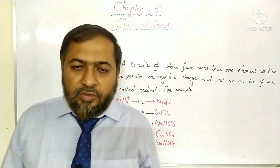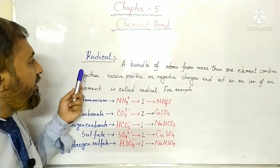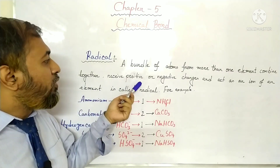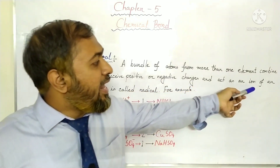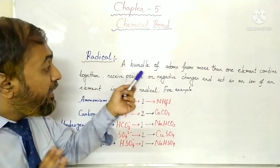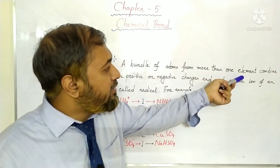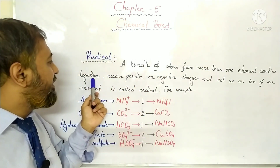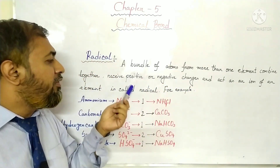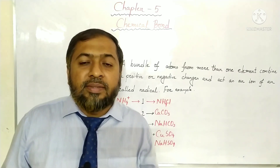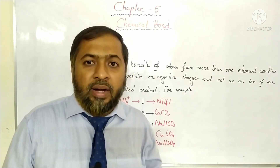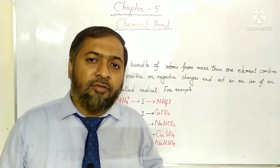Now students, another new topic is radical. What is actually a radical? A bundle of atoms from more than one element combined together, receiving a positive or negative charge and acting as an ion of an element, is called a radical. So a radical is a bundle of atoms that during a chemical reaction remains intact and works like an ion of an element.